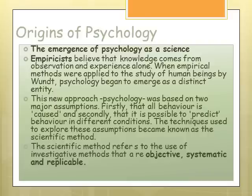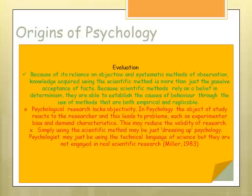The scientific method refers to the use of investigations that are objective, systematic, and reliable. We should be objective in our collection — it shouldn't be based on any opinion, it should be fact-based — it should be systematic, and it should be replicable, so we should be able to repeat our observations and methods at future dates. Generally, psychology does use objective and systematic methods of observation to gain findings.